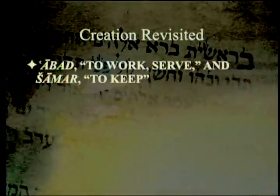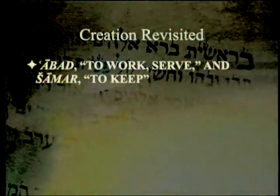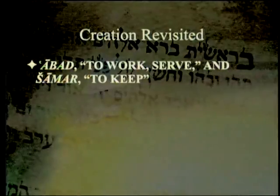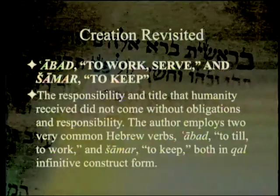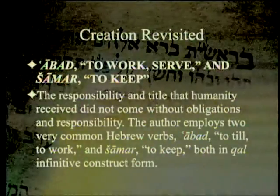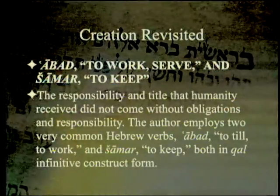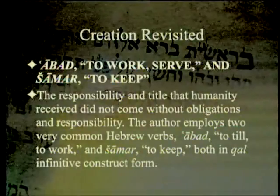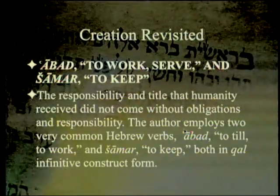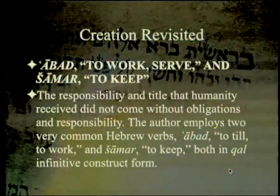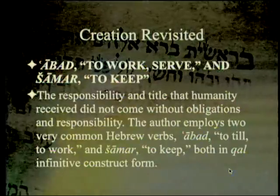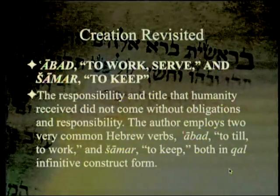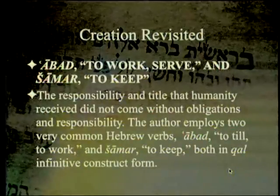The two verbs in Genesis 2:15 are 'abad' and 'shamar,' meaning to work/serve and to keep. Note that 'ebed,' which is cognate of 'abad,' is 'servant' and can also mean slave. The responsibility and title that humanity received did not come without obligations. The author employs two very common Hebrew verbs: 'abad,' to till or to work — a very difficult sound to pronounce — and 'shamar,' to keep, both in the qal infinitive construct form.